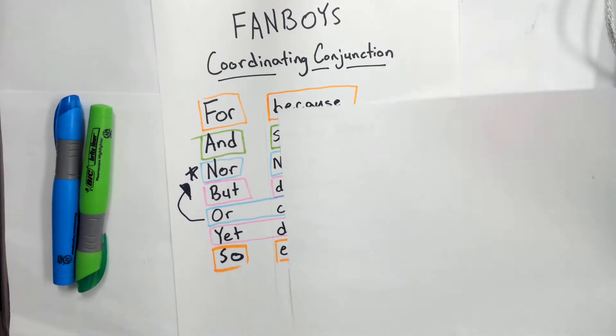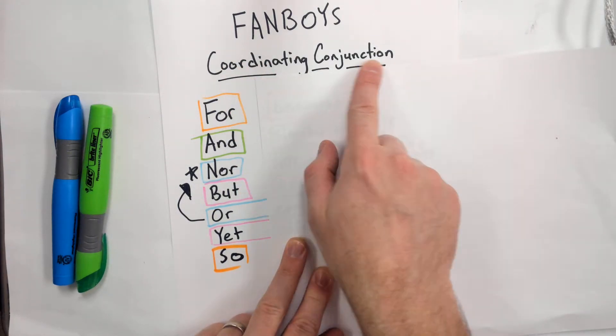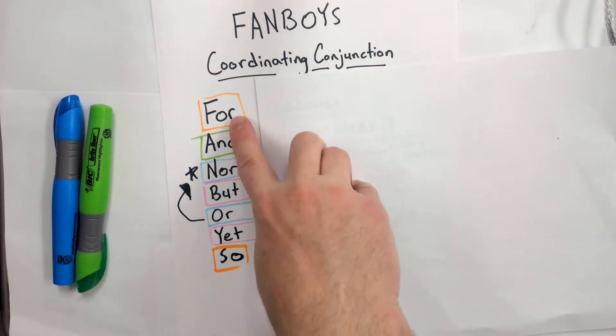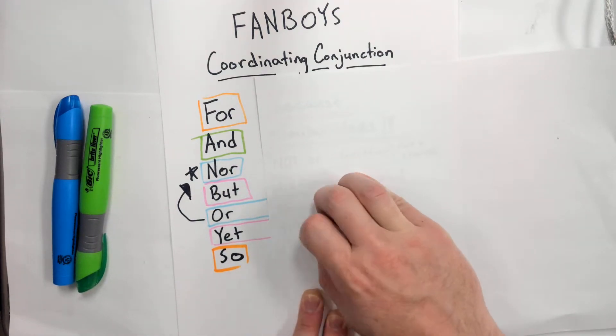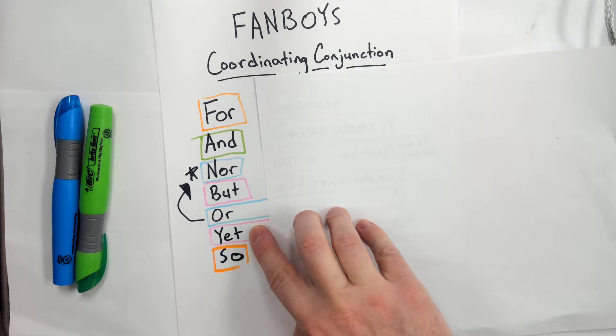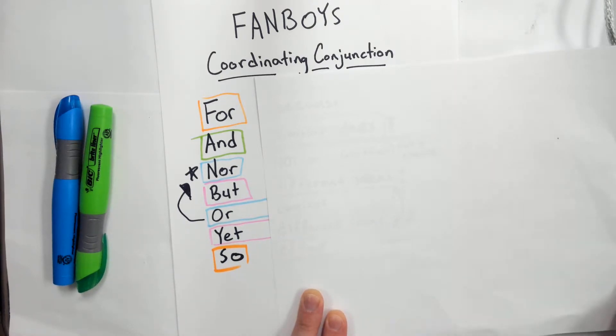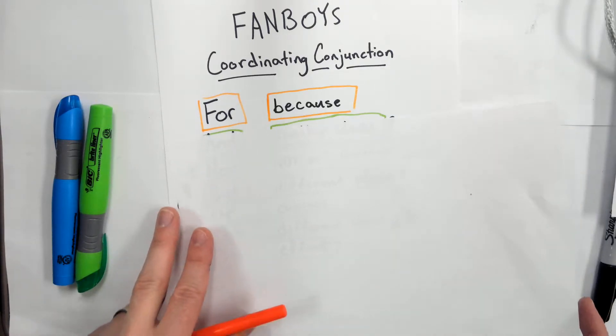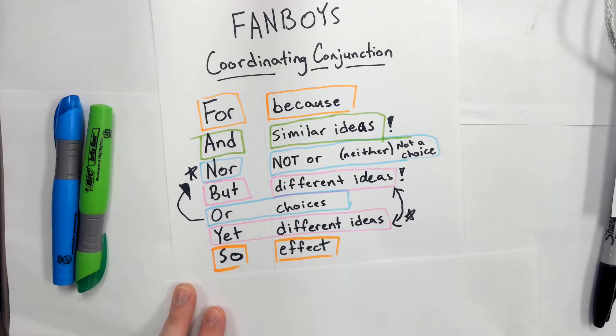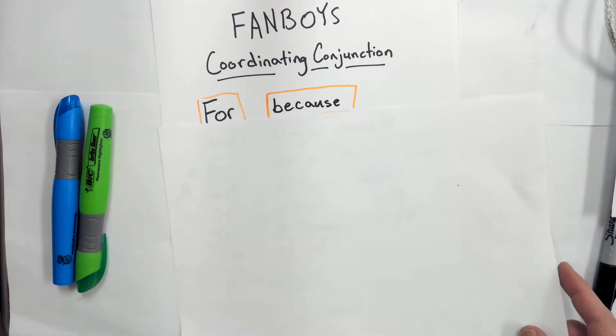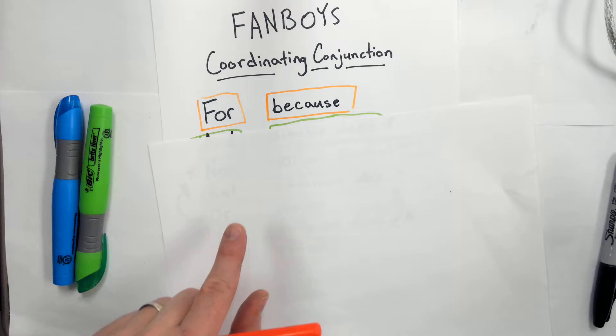Let's revisit our coordinating conjunctions, our FANBOYS: for, and, nor, but, or, yet, so. For this lesson, we're going to focus on 'for' and 'so.' For is like 'because' - it's very similar to 'because,' actually.